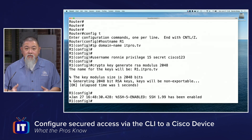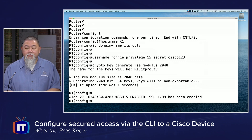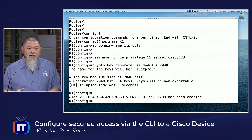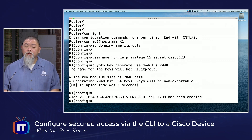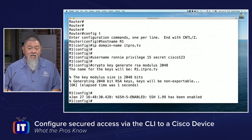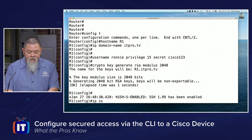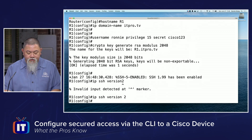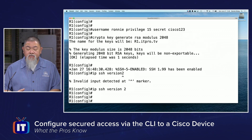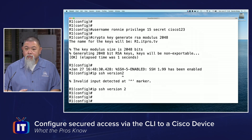I press enter and it's generating. Because I'm on a virtualized router, it generated very quickly — about one second elapsed time. You'll also see a message that tells you SSH 1.99 has been enabled, meaning it supports SSH version 2 but also SSH version 1. Since SSH version 1 has been compromised, we want to limit it to version 2 only. So we type IP SSH version 2. This ensures only SSH version 2 will be accepted, which is much more secure.